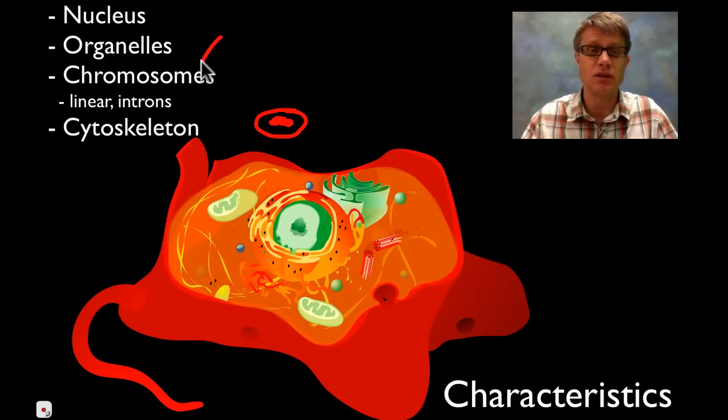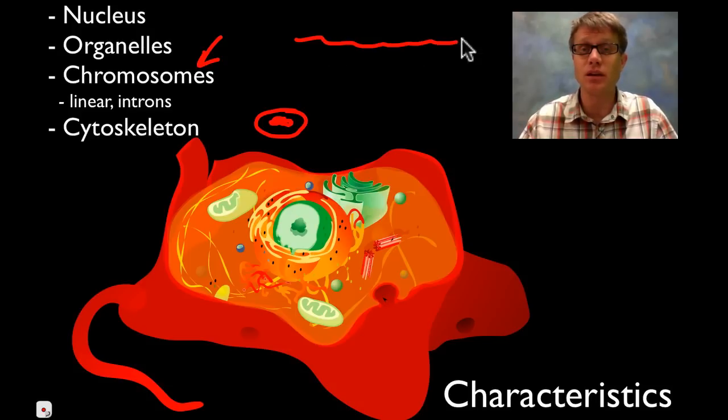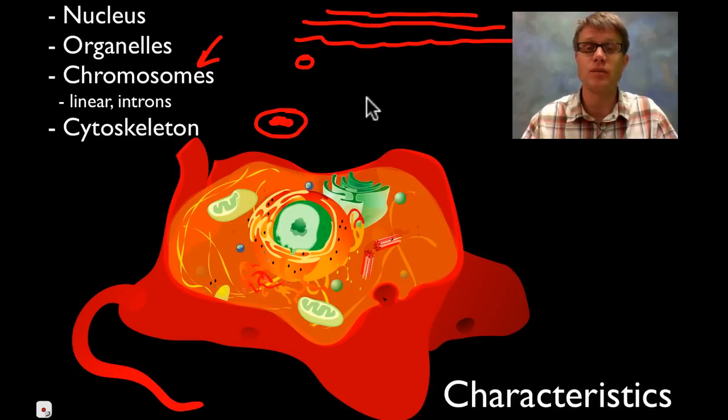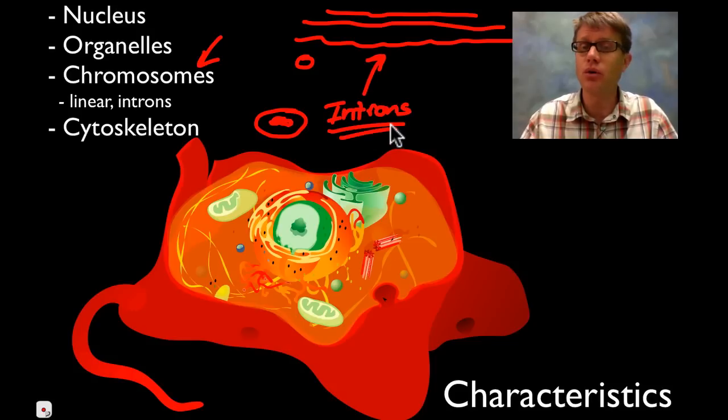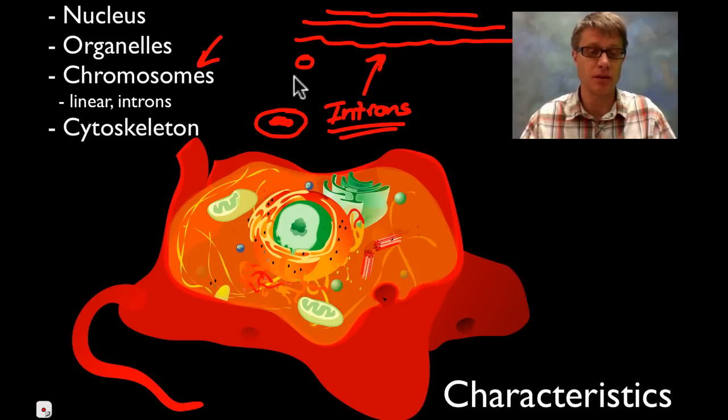Another big characteristic that's different in eukaryotic cells is going to be our chromosomes. Remember in bacteria and Archaea, their chromosome is a simple loop. But in us, it's going to be a linear stretch of DNA. Theirs is a loop; ours is chromosome after chromosome after chromosome. We also will have introns, sections of our DNA that don't code for genes, whereas on their DNA, every little bit of it is going to code for something.